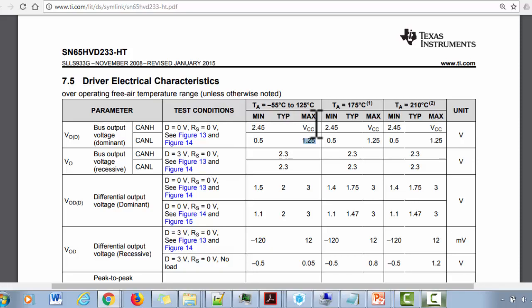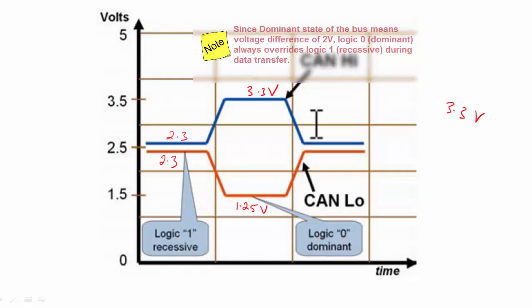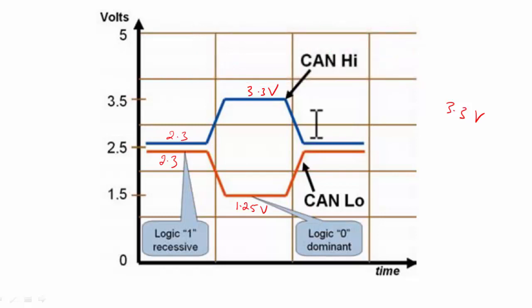That's about the differential signals used in CAN protocol and the recessive and dominant states. These terms are used in CAN where 'dominant' means dominant over the recessive state. Logical zero is always dominant over logical one, because logical one results in the recessive state of the bus and logical zero always results in the dominant state of the bus.